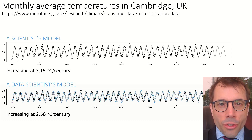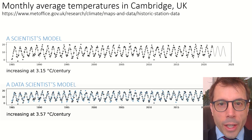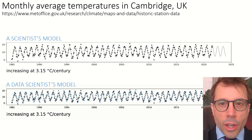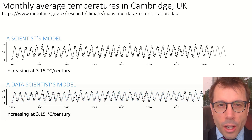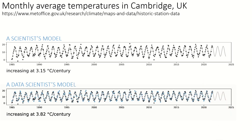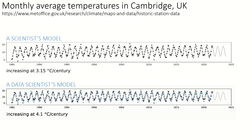So I don't just say I think temperatures are increasing at 3.15 degrees centigrade per century. I say the data is noisy and I don't know the exact rate of increase. But nevertheless, I'm highly confident that it's between 2.5 and 4. That's the real power of probability modelling.